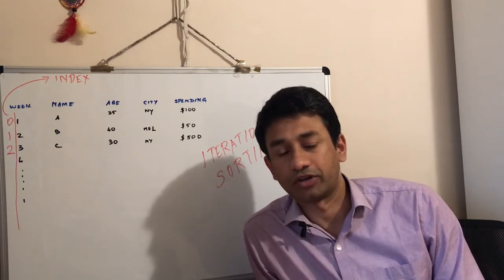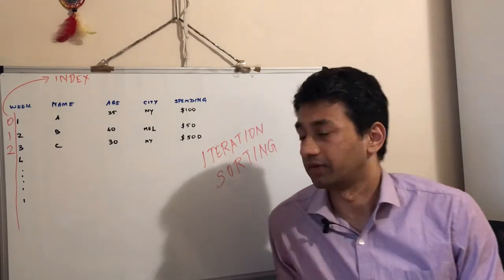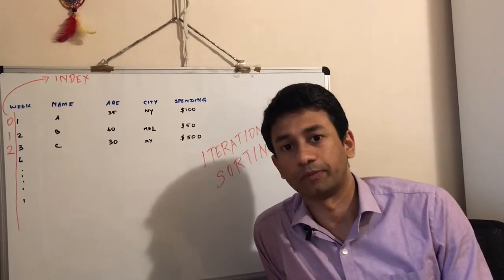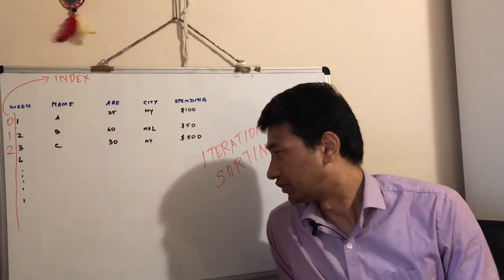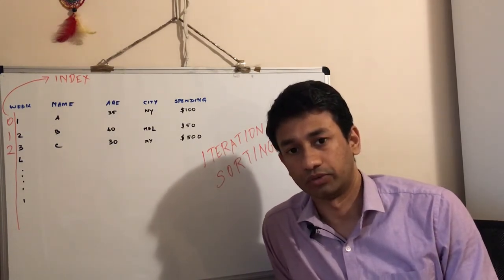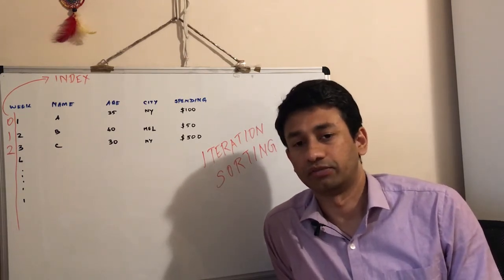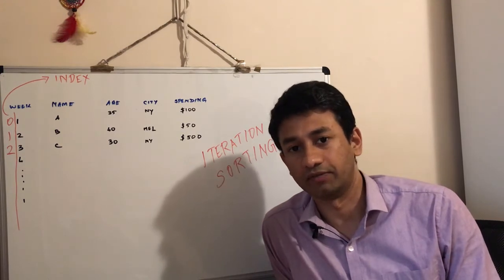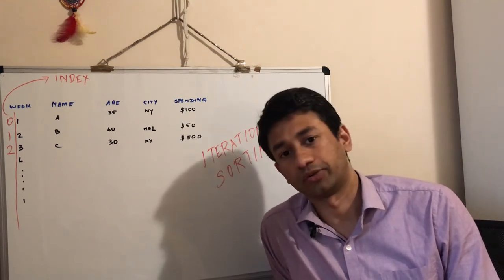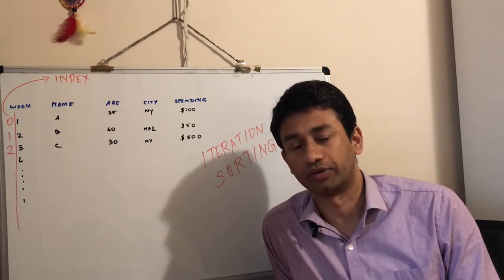The topic we are going to talk about today is iteration as well as sorting. We need to iterate through a data frame — going through each and every individual row to look for some kind of pattern or information. We'll see three different methods to iterate through a data frame and how they differ from each other, as well as sorting. In many cases we might have to sort the data to look for characteristics or behavior, based on the index, a single column, or multiple columns.